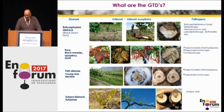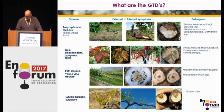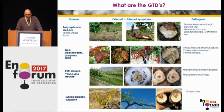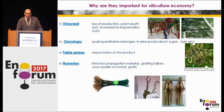In this project, we specifically focus on ESCA with all its forms. We have Botryosphaeria dieback or black dead arm. We have the Petri disease as well. We have Eutypa dieback. And in this slide, you see the symptoms which refer to both the aspect of the plant and symptoms which affect the tissues of the plant.